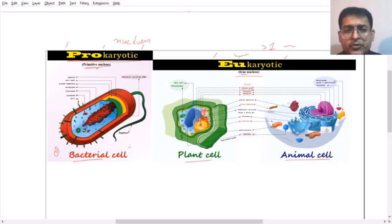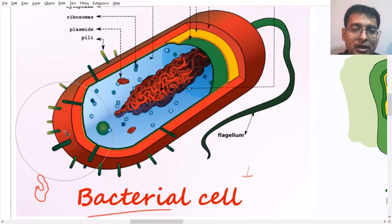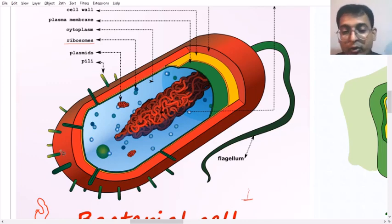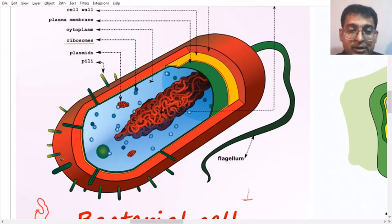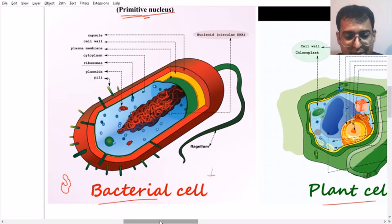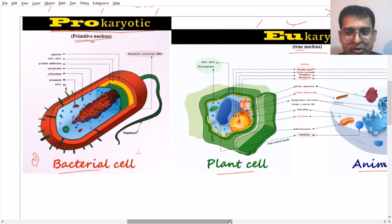Another difference between prokaryotes and eukaryotes is the ribosome. The ribosome is known as the factory of the cell — it manufactures proteins, which are very important for the cell, as different structures are mainly made up of proteins. In prokaryotes the ribosome is a small structure, whereas in eukaryotes it is a larger structure.